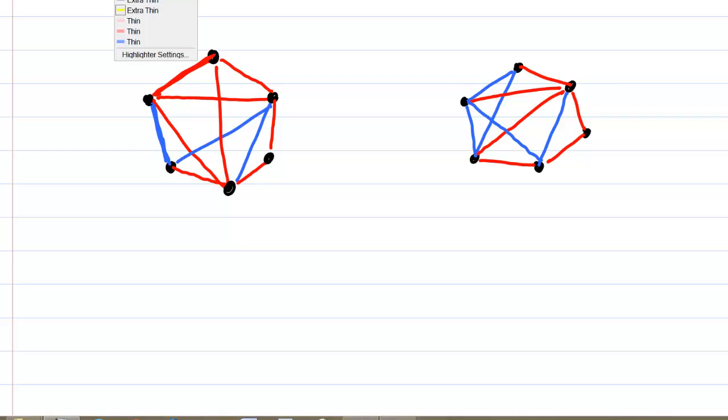Now the theorem says that regardless of the relationships between these pairs of people, there has to be a group of three that are all mutual enemies, enemies with each other, or all mutual friends. So there has to be a triangle with all red lines between them or all blue lines between them.